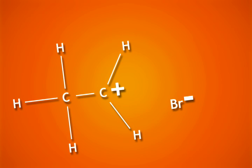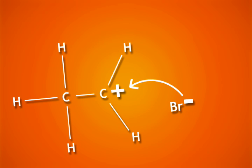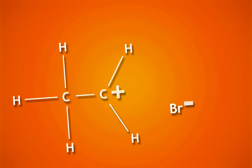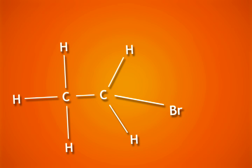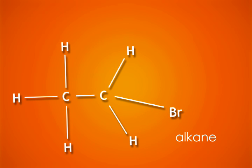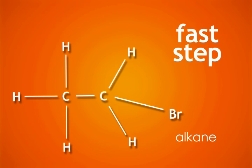The bromide ion is now a suitable electron donor for the carbocation. The molecule is neutralized and an alkane results as the final product. This concludes the last and faster step of the reaction.